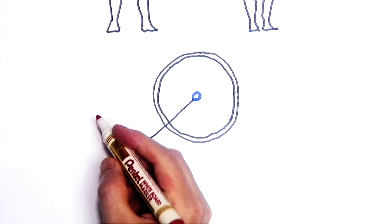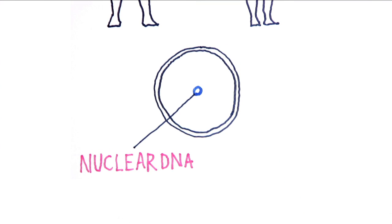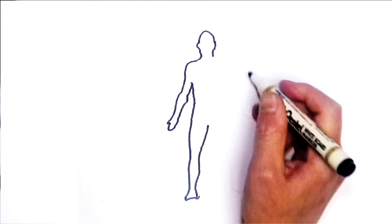In the nucleus of each of these cells you can find a copy of your nuclear DNA, which is made from a mix of your parents' chromosomes and so is unique to you.